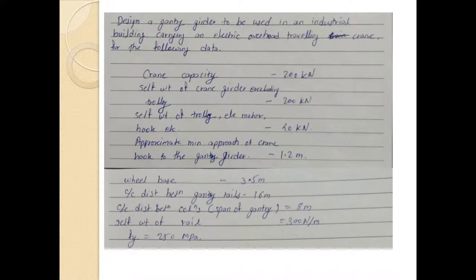This is the problem statement: Design a gantry girder for an industrial building carrying an electric overhead travelling crane with the following data. Crane capacity: 200 kN. Self-weight of the crane girder excluding the trolley: 200 kN. Self-weight of the trolley, electric motor, and hook: 40 kN. Minimum approach of the crane hook to the gantry girder: 1.2 m. Wheel base: 3.5 m. Centre-to-centre distance between gantry rails: 16 m. Span of the gantry (centre-to-centre of columns): 8 m. Self-weight of the rail: 300 N/m. Fy of steel: 250 MPa.